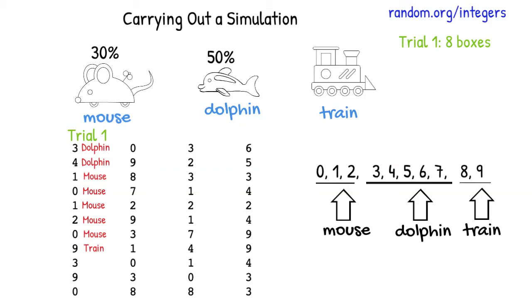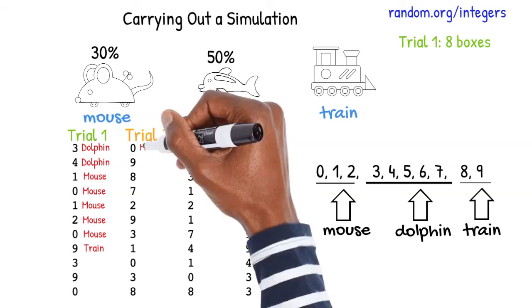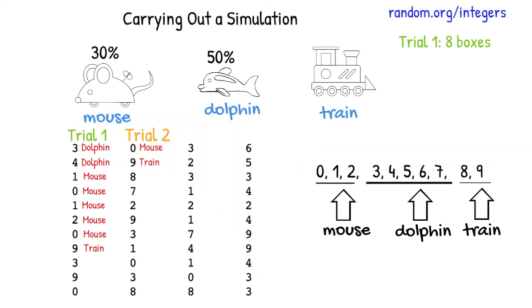One trial is not enough since we could have been lucky or unlucky. To answer our question, we'll have to do several trials and take an average. For trial two, we first pick a mouse, then a train, another train, and then a dolphin. Trial two ends. It took four boxes in this trial to collect all three toys.